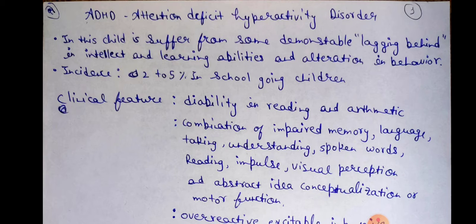The incidence is 2–5% in school-going children. Now, clinical features — how will you diagnose and identify a child suffering from ADHD? Through their clinical features.